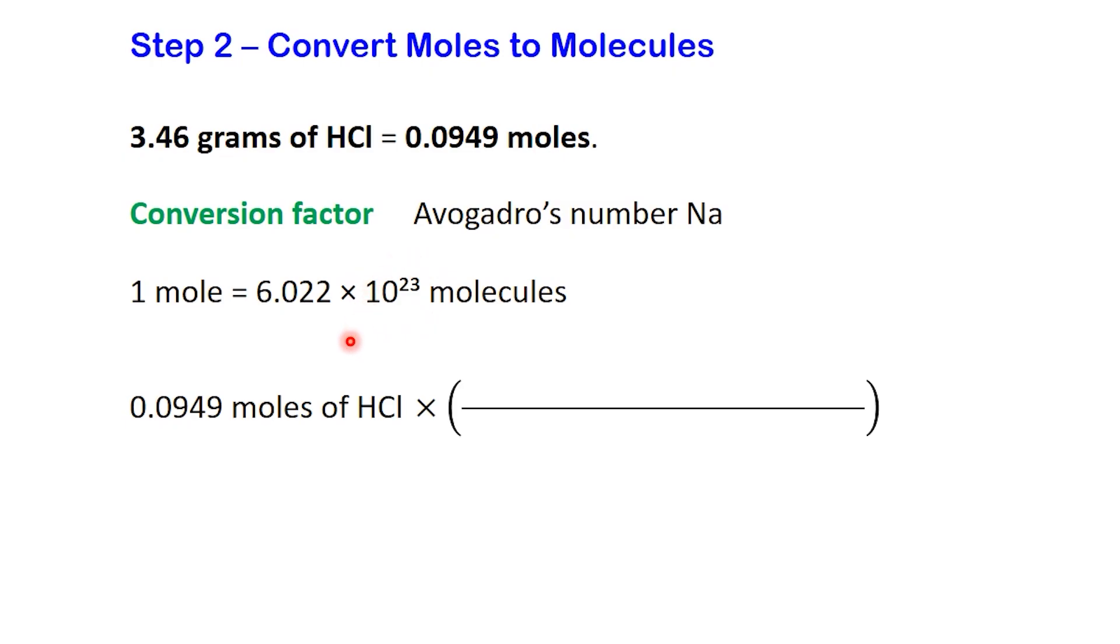Now here's the trick. Since the unit we're starting with is moles, we want to cancel that out. So we write 1 mole on the bottom and 6.022 times 10 to 23 molecules on the top. Why? Because we want the unit moles to cancel, and the unit molecules to remain. That's what we're trying to find. So the setup looks like this. Now the unit mole cancels out, and we're left with molecules just like we want,